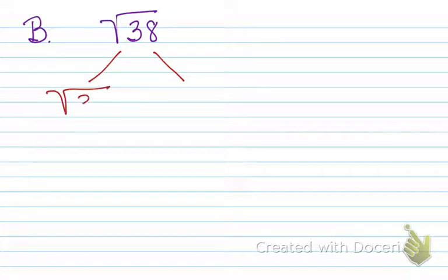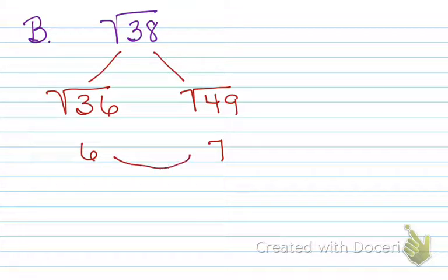So I know this one's the square root of 36. Which is 6. And I know this is the square root of 49. You can use your number line from yesterday to look. This is 7. So I know it's going to be in between somewhere in between here is where my answer is going to be. So it's going to be 6 point something.